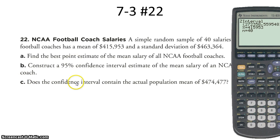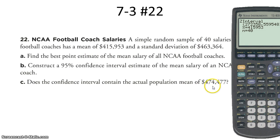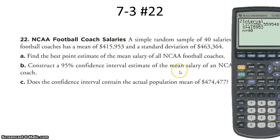The calculator tells us the true mean salary of NCAA football coaches is somewhere between 272,358 and 559,548. It also lists the sample mean and sample size used. For part C, they ask whether the confidence interval contains the actual population mean of 474,477 — and yes, it does. Our sample of 40 salaries produced a mean less than the true population mean, but since 474,477 falls within the 95% confidence interval, we acknowledge that our sample mean of 415,953 is not significantly different from the true population mean.